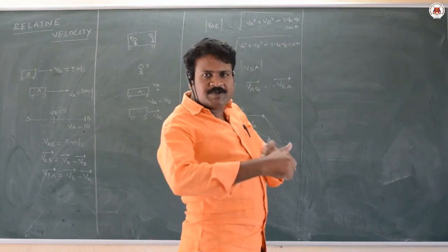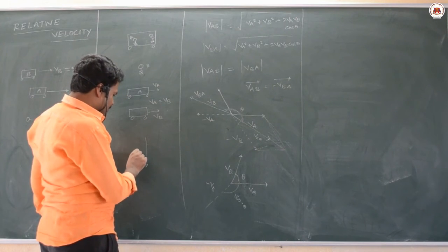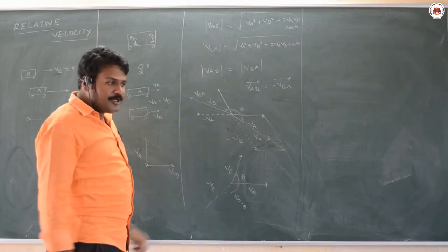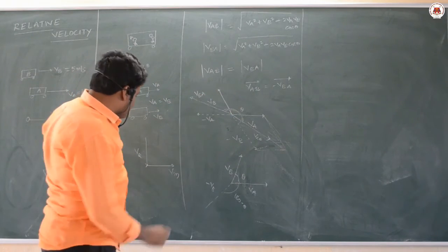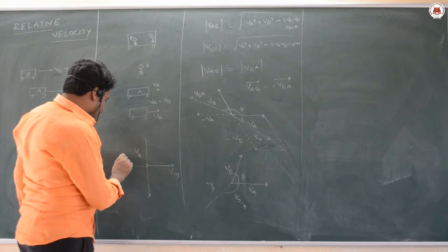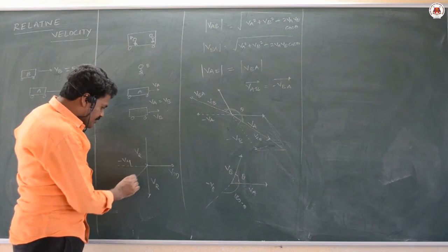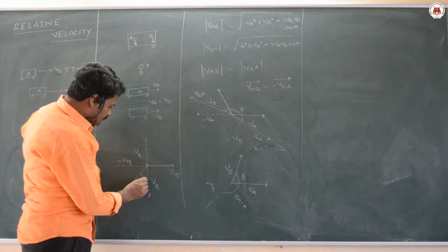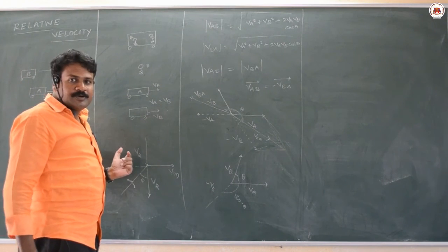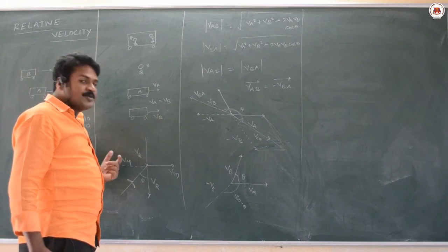When you are running forward, your velocity acts backward in the relative frame. Draw the velocity of rain downward and minus V_man forward; these are two adjacent sides of a parallelogram. The diagonal gives the resultant — that is the direction in which you must hold the umbrella, which is the relative velocity of rain with respect to man.